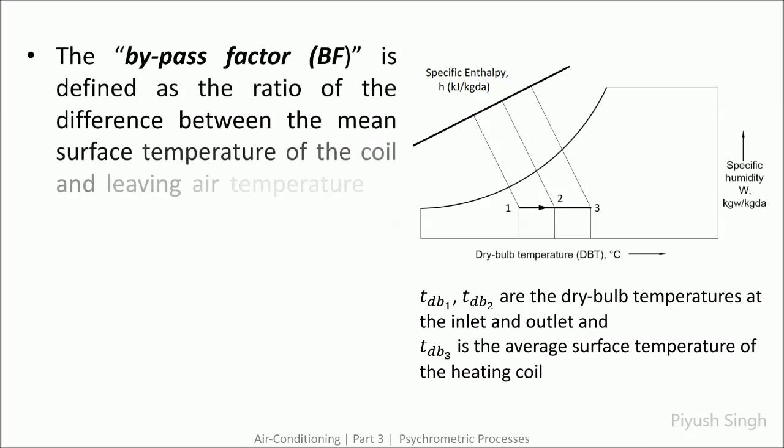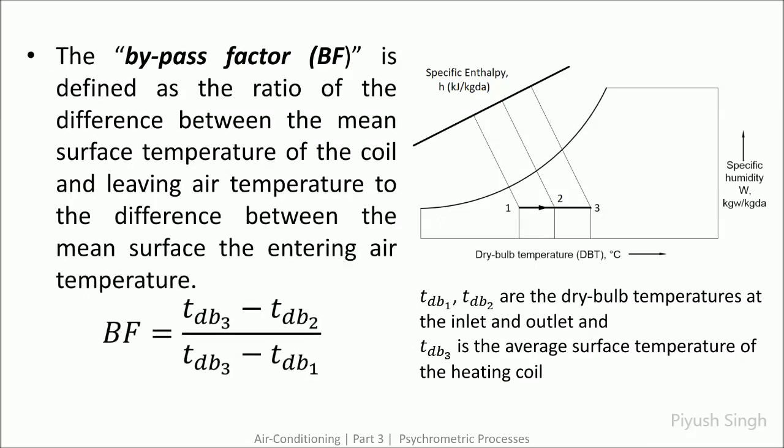The quantity that measures this is called bypass factor. To understand this with an example: say we have an examination of total marks 100 and student A scores 80 out of 100 and student B scores 90 out of 100. Student A wished to score 100 but could achieve only 80, so what he could not achieve is 20 marks. Similarly student B could not achieve 10 marks. So the bypass factor for student A would be 20 upon 100, which is 0.2, and for student B it will be 0.1.